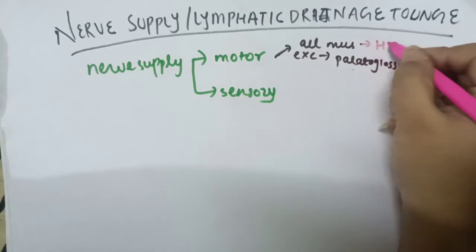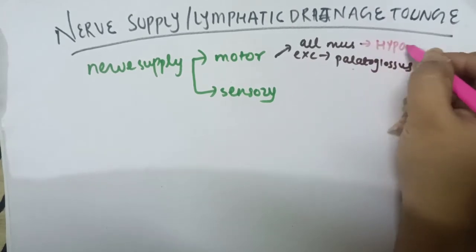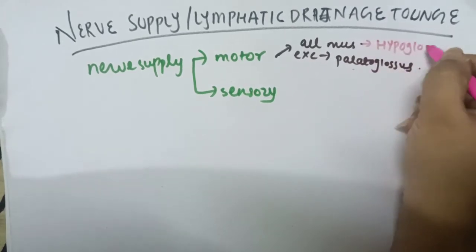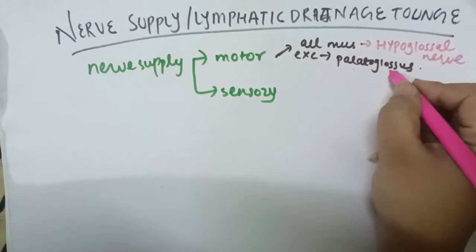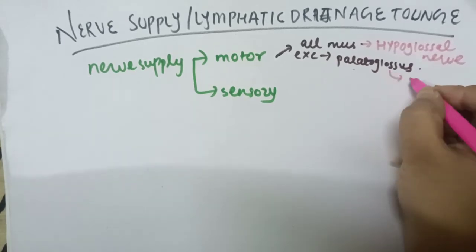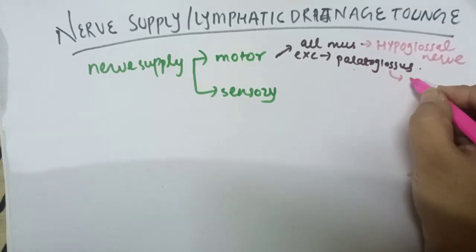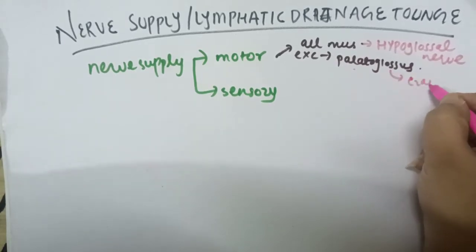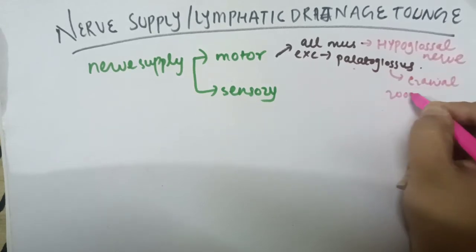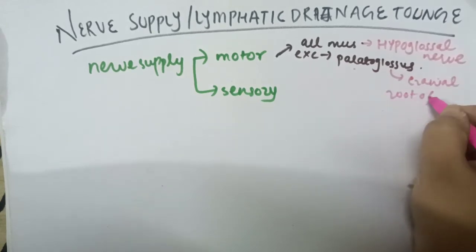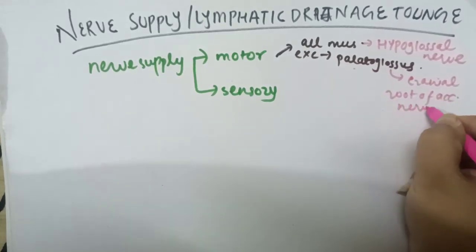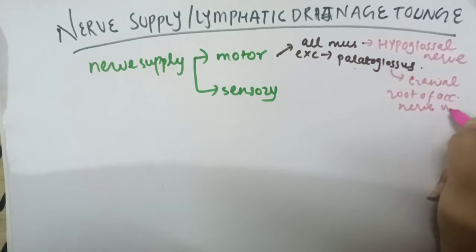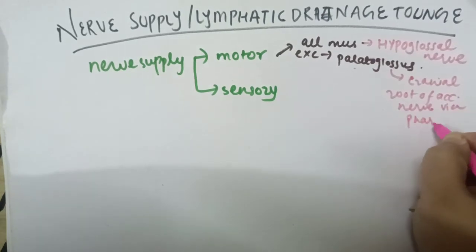To reiterate, the palatoglossus is supplied by the cranial root of the accessory nerve via the pharyngeal plexus. This completes the motor nerve supply of the tongue.